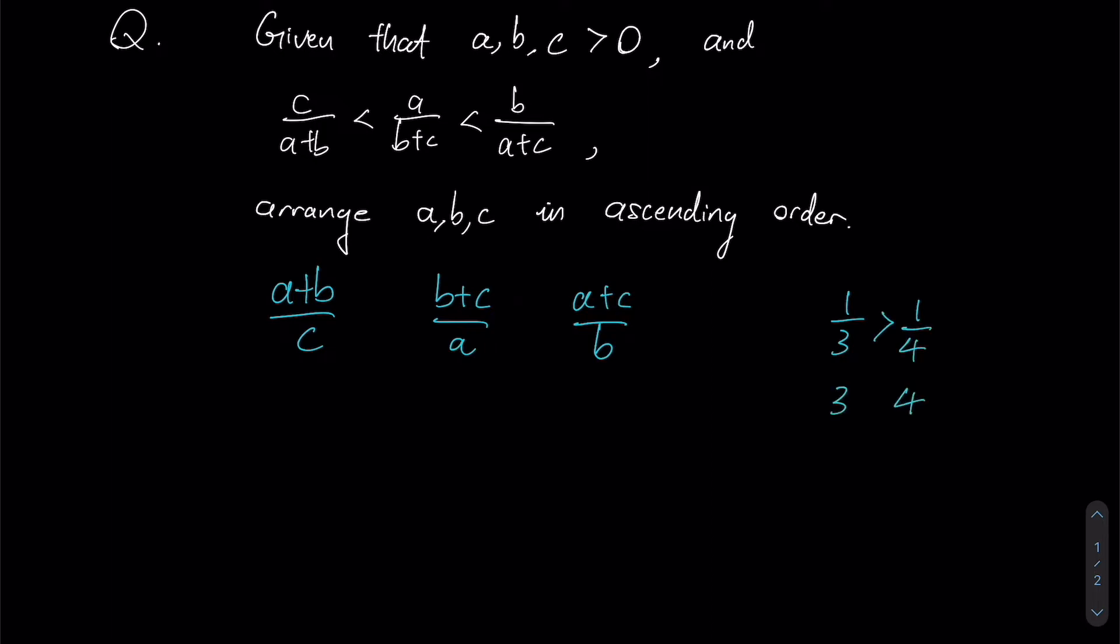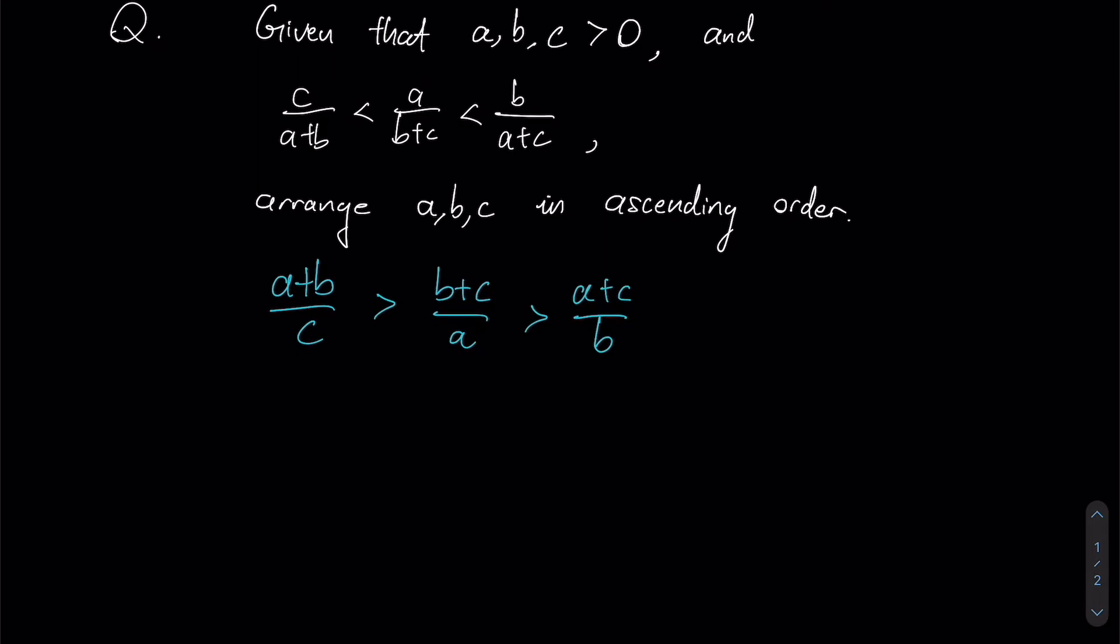Because we can see that if one-third is greater than a quarter, if we were to flip the fractions around and take the reciprocal we will get three and four as whole numbers. Notice that the relationship is now inversed. Therefore this simple example illustrates that we have to invert the inequality signs such that this is now the new relationship.